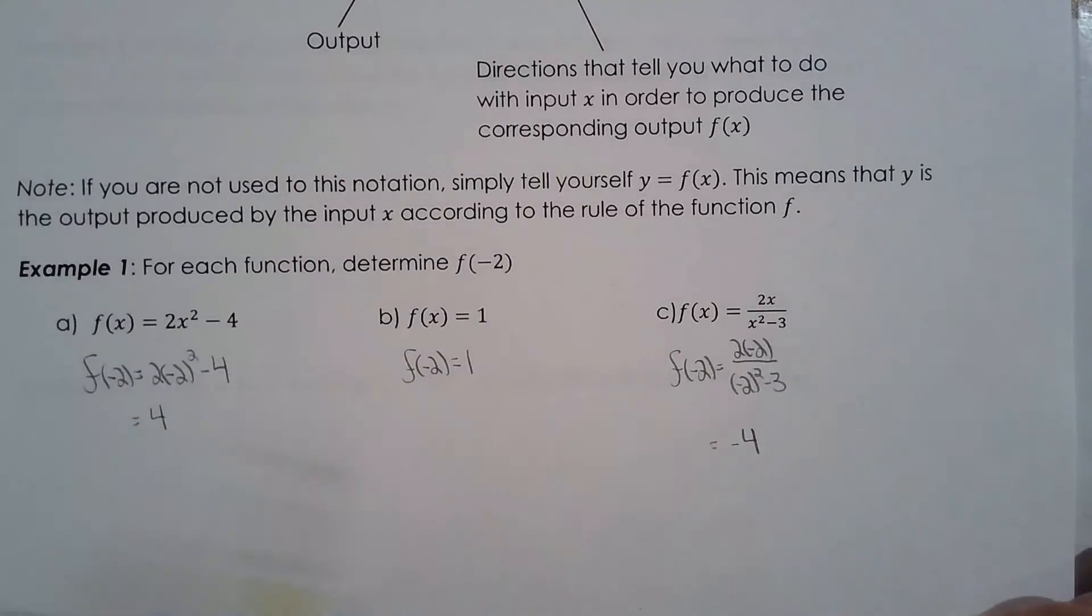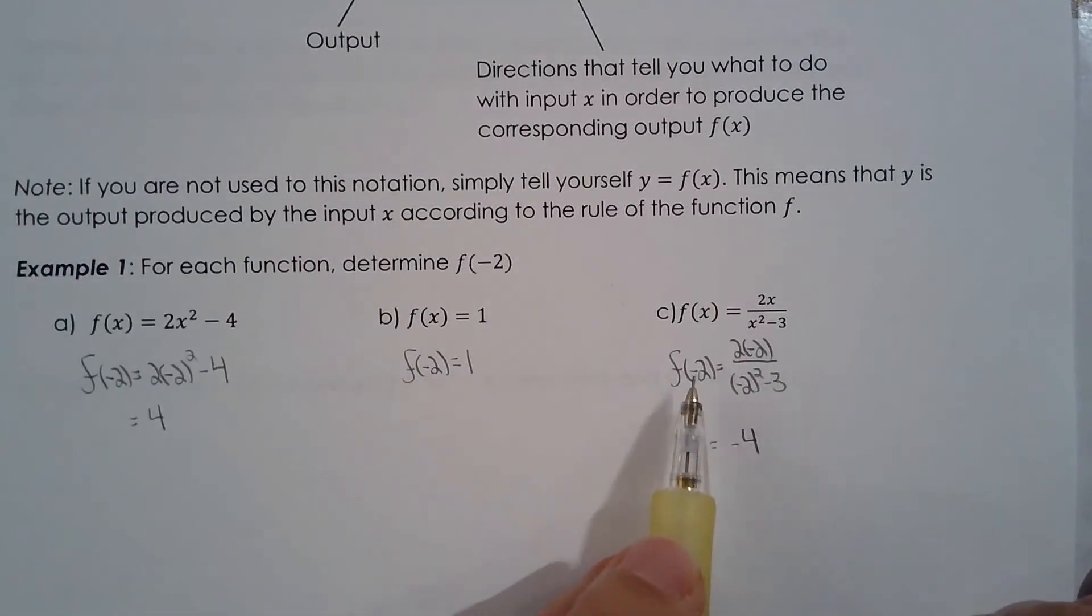So input, output. Input for 1c is negative 2, and output when input is negative 2, the output is negative 4. Perfect.